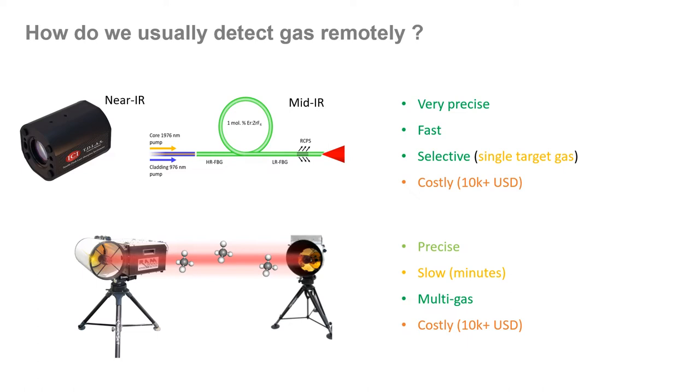In the case where multi-gas detection is desirable or when the target gas is unknown, the absorption spectral measurement is preferred. Unfortunately, the measurements can take several minutes and they are a little less precise than what you can get with the tunable laser approach. This is mostly related to the time needed for the spectral measurement and data processing. And again, these systems can be quite expensive because of the need for a spectrograph or monochromator, for instance.